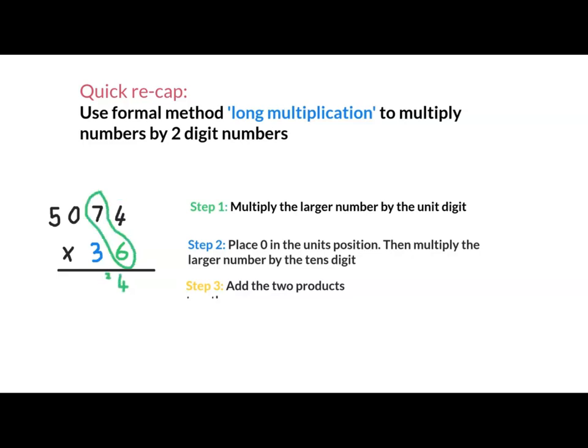7, 6's is 42. Add on the 2, 44. 6, 0's is 0. Add on that 4, 4. 5, 6 is 30. Step 1, complete.